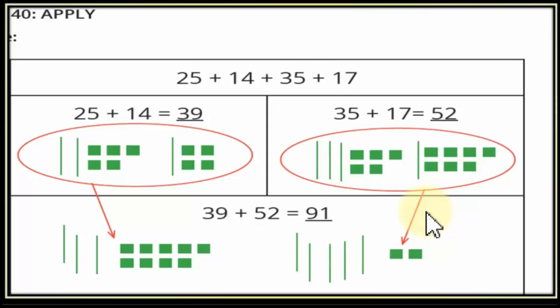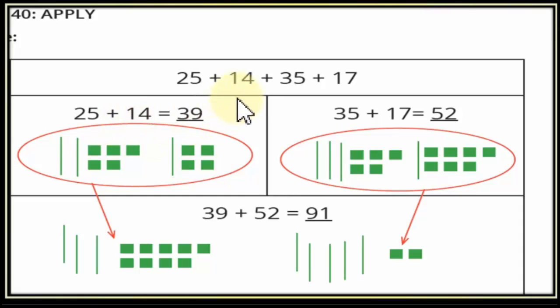Look at the first question: 25 plus 14 plus 35 plus 17. بنجمع أربع أعداد مكونين من رقمين. We have four numbers consisting of two-digit numbers: twenty-five, fourteen, thirty-five, seventeen. هما كتير قوي — تعالوا نسهّلها على نفسنا. ناخد 25 مع 14 مع بعض ونجيب السم بتاعهم، وناخد 35 مع 17 مع بعض ونجيب السم بتاعهم، وبعد كده نجمع النواتج.